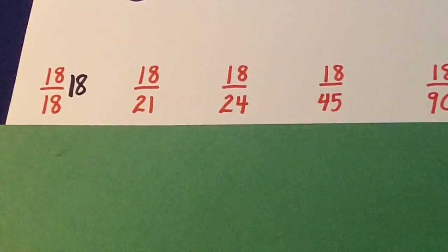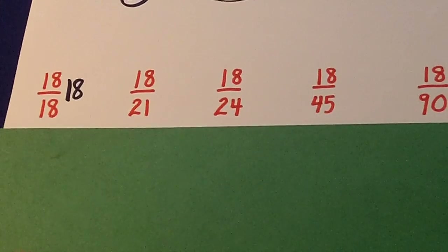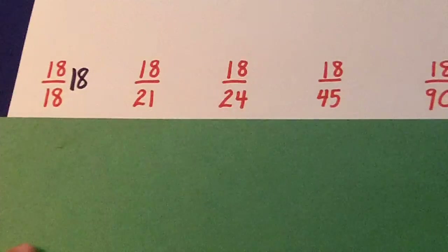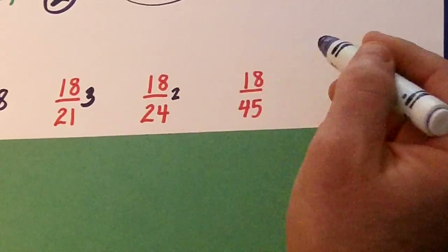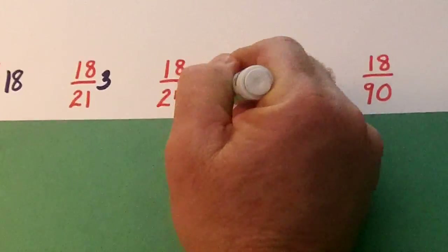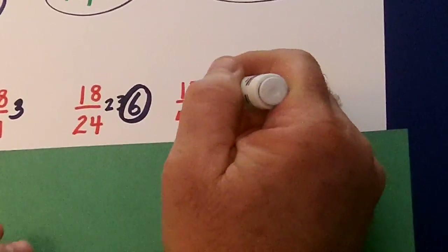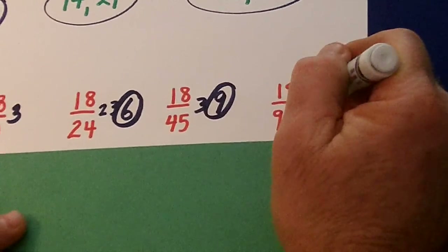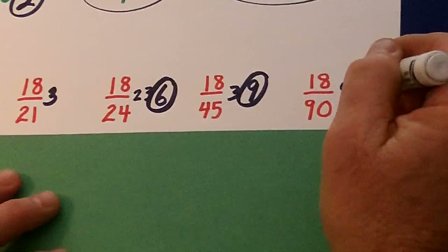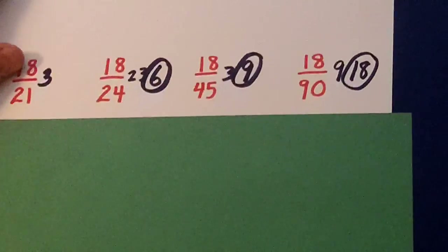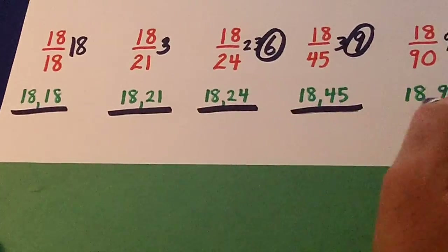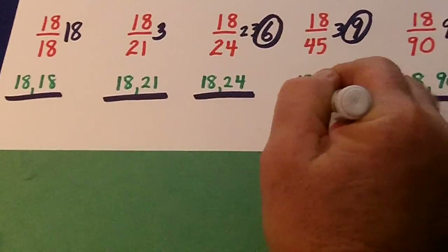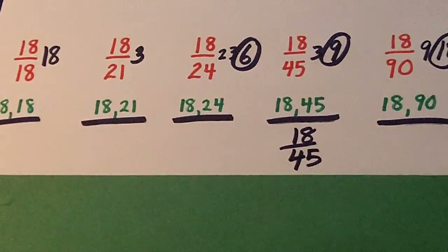18 and 18 — 18 goes into both of those; that's the biggest number that can go into both. What about 18 and 21? 3 is the biggest number there. What about 18 and 24? 2 can go into them, so can 3, but 6 is the biggest. How about 18 and 45? 3 can go into them, but 9 is the biggest. How about 18 and 90? 9 can go into them, but so can 18 — 18 is the greatest common divisor. The book wants you to do it like this, so you just have to pretend that these are fractions that need to be reduced.